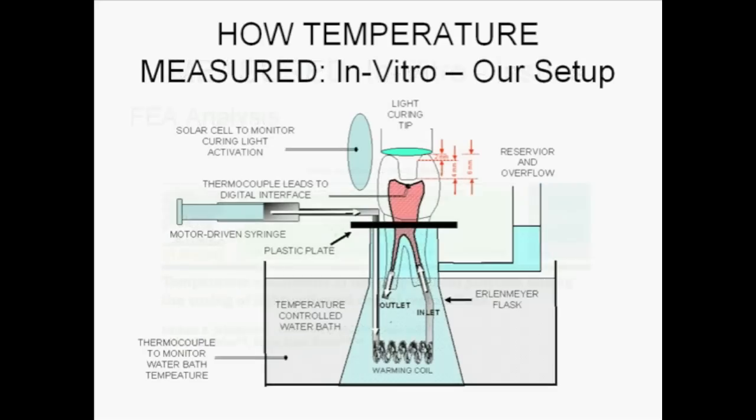The experimental technique used in our laboratory attempts to overcome many of these issues. The system uses an infusion pump to supply water at a physiologic rate similar to that of human pulp into one root of an extracted tooth, which then circulates through the pulp chamber and exits out through the other root. The fluid is pre-warmed in a temperature-controlled bath so the pulpal temperature is similar to that of the in vivo state.